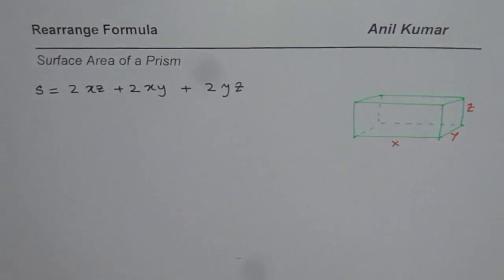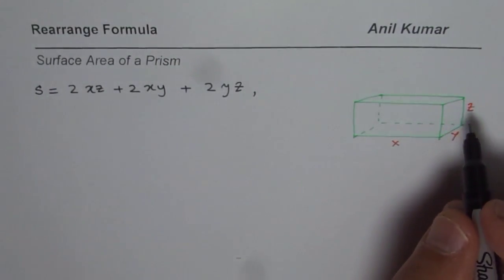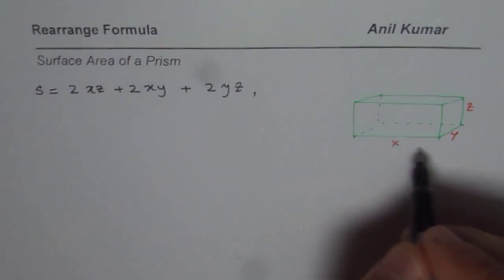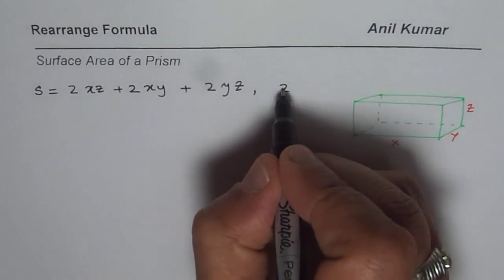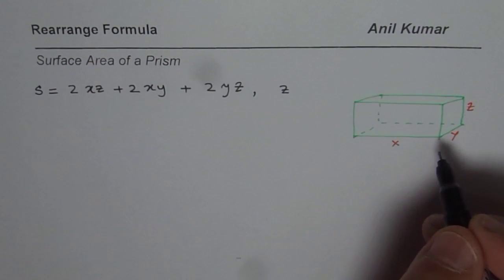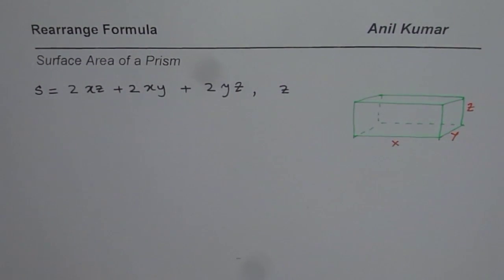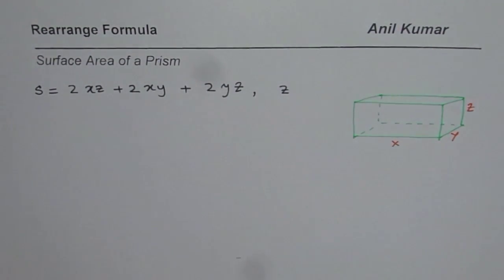In this particular video, we are going to observe how to isolate one of these variables. Let's say we know that the surface area is 100 and we need to find Z, the height, for this prism in terms of the other defined variables. You can pause the video, try to answer, and then look into my suggestions. Basically, we need to isolate the variable Z from this equation.